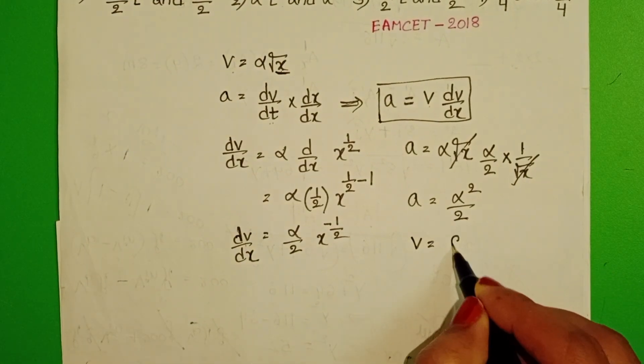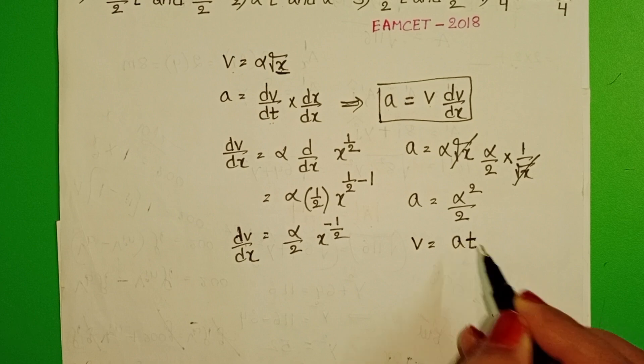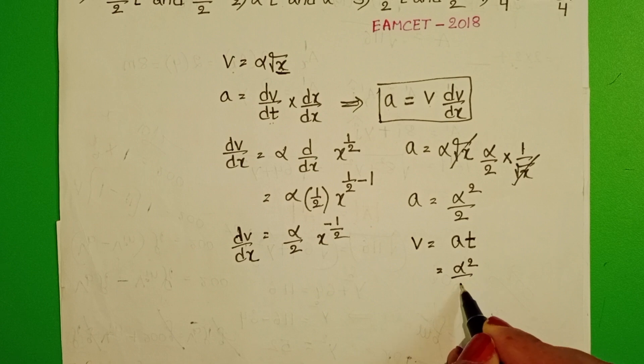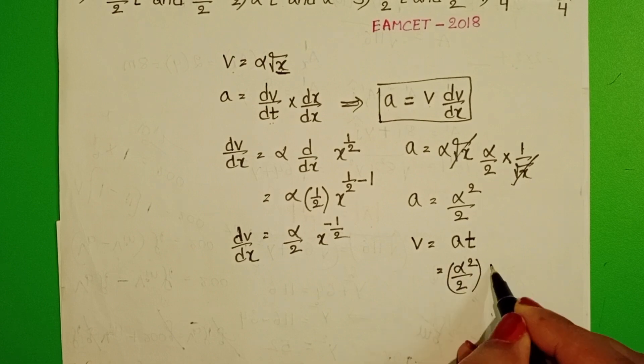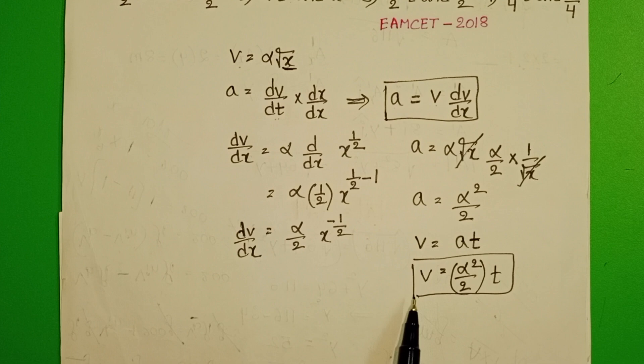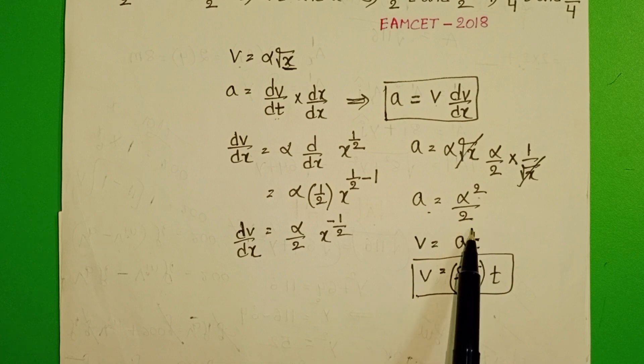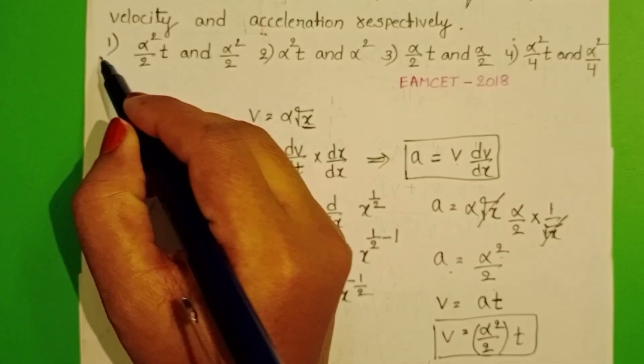Velocity equals acceleration into time. In place of acceleration, substitute alpha square by 2 into t. Time dependence of velocity is alpha square by 2 into t, and acceleration is alpha square by 2. First option is correct.